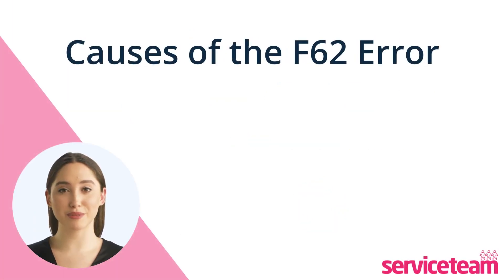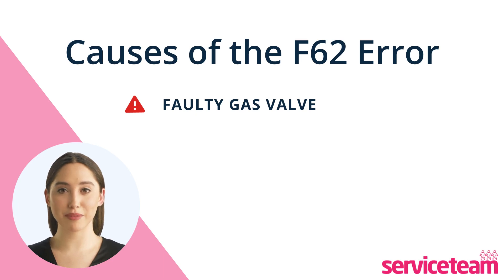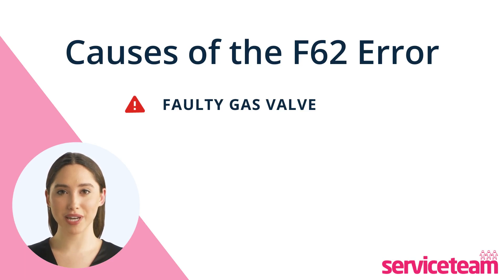Let's understand what causes the F62 error. One reason for the F62 fault code is a faulty gas valve. This valve can prevent gas from reaching the burner, resulting in the boiler malfunctioning. The gas valve's role is to control the flow of gas to ignite the burner, but if it's not opening or closing correctly, the boiler won't function properly.